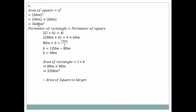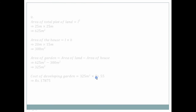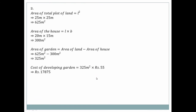So the area of the rectangle is equal to 80 meter × 40 meter = 3200 square meters.